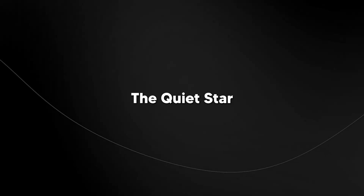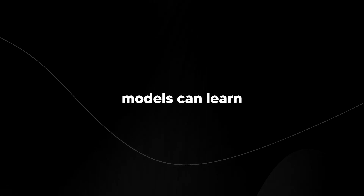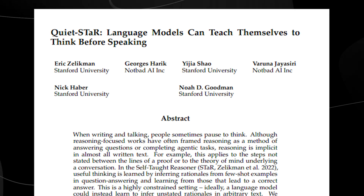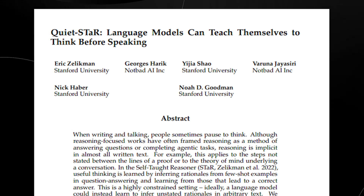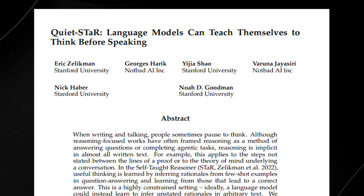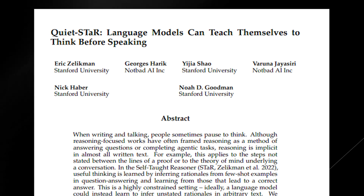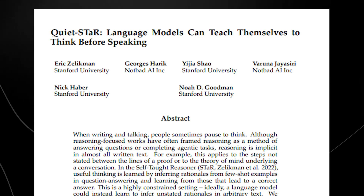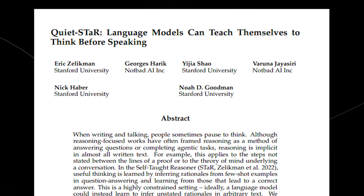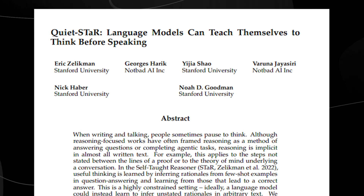The QuietStar technique shows that language models can learn general reasoning capabilities through self-supervised learning on text without explicit reasoning supervision. By learning to generate chains of thought that improve its predictions, a model develops reasoning skills that transfer to challenging question-answering tasks.